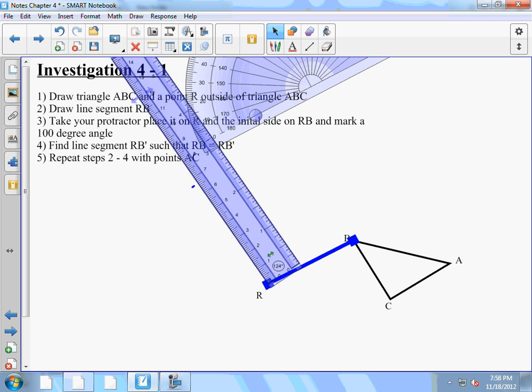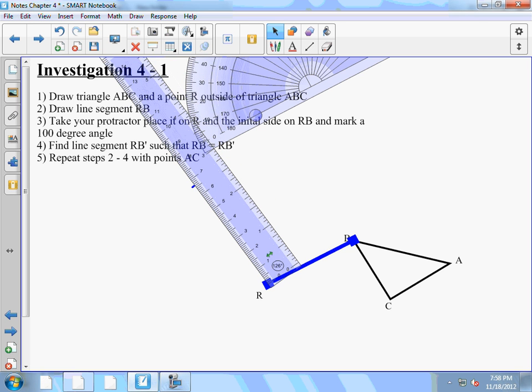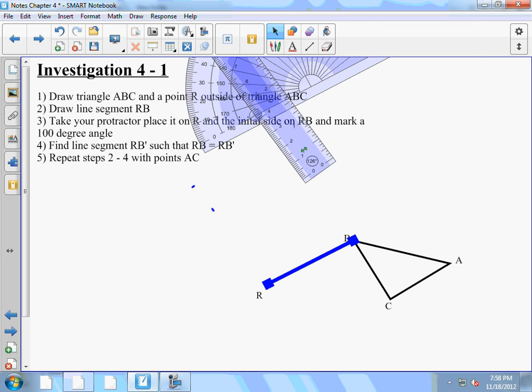I'm going to want to connect my ruler from R to that little mark and find out where 5 centimeters is. So here it is through my ruler. This point right here is where B prime goes, so that represents a rotation of 100 degrees for B.